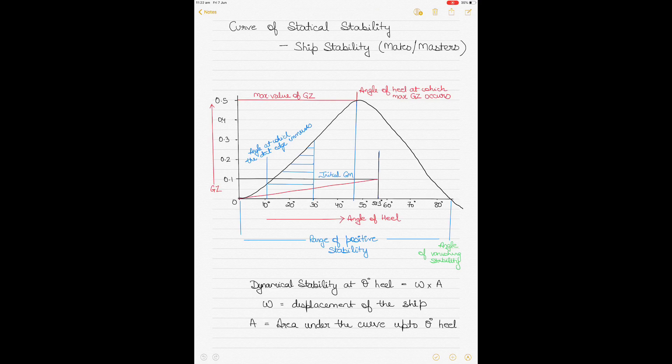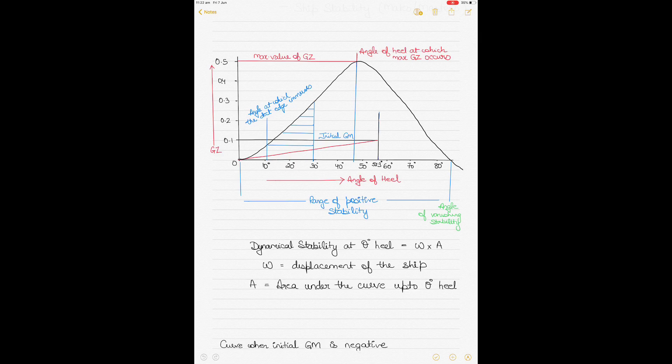This curve is called the curve of statical stability. The first thing you should notice is that the GZ, or the righting lever, is plotted against the various angles of heel. On one axis you have the values of GZ or the righting lever, and on the other axis you have the various angles of heel, starting from zero degrees — 10, 20, 30, 40 degrees.